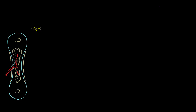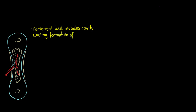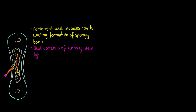Moving to the next step, a new structure called a periosteal bud appears in the middle of the bone and will be in charge of directing new bone growth. This periosteal bud invades that cavity and causes the formation of spongy bone. It consists of an artery, a vein, lymphatics, nerves, and it also delivers osteogenic cells.